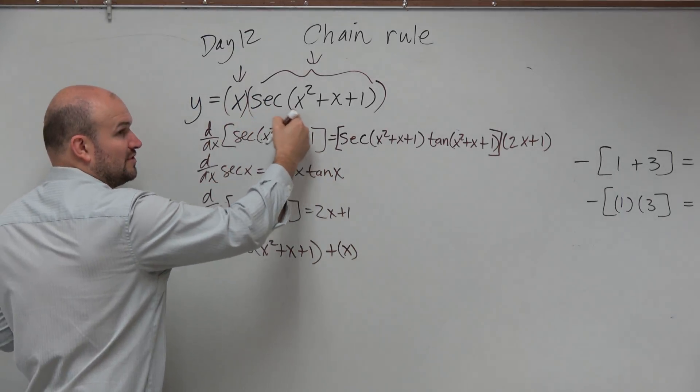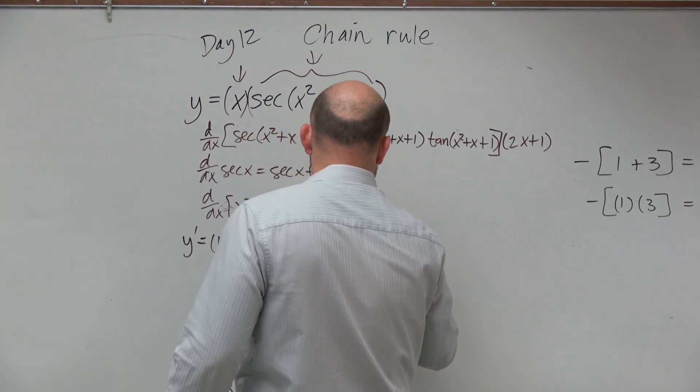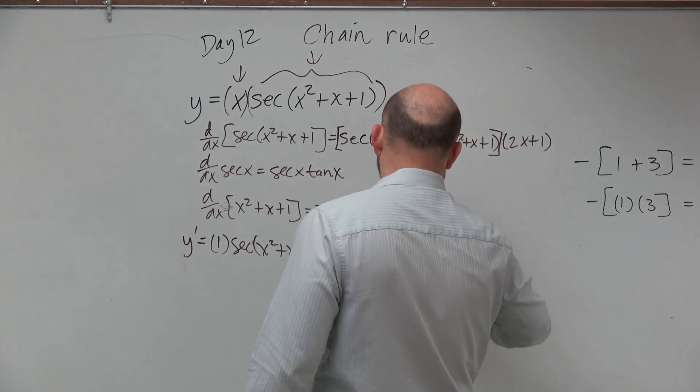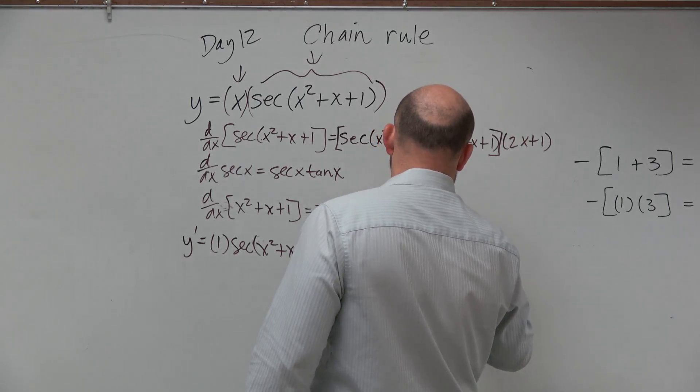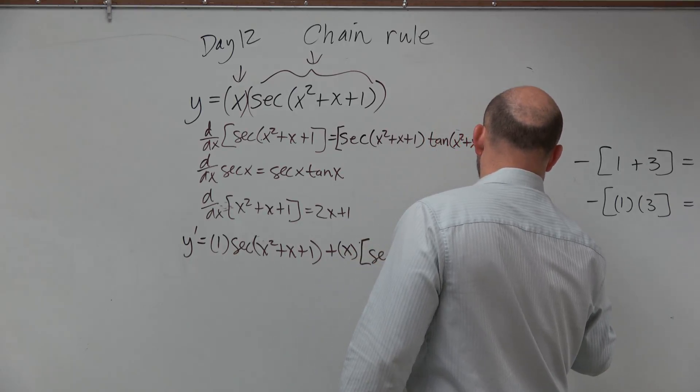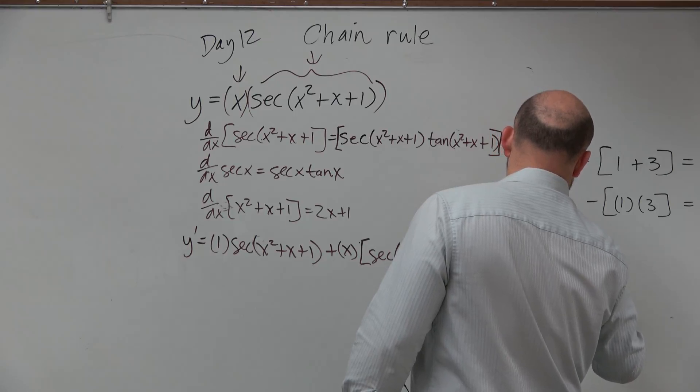times the derivative of my second function, which I found separately to be secant of—why do I keep writing that?—x² + x + 1 times tangent of x² + x + 1 times 2x + 1.